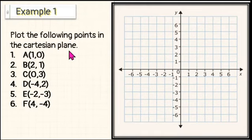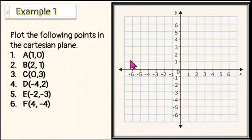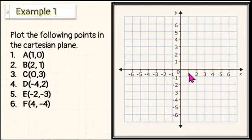Let us explore the following example. Plot the following points in the Cartesian plane. Number 1: A (1, 0). To plot point A, start at the origin and count one unit to the right. Since the y-coordinate is 0, point A is located on the x-axis here.